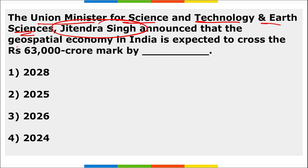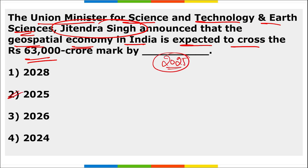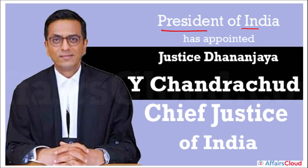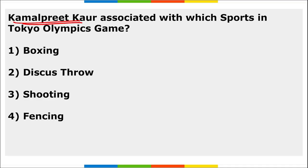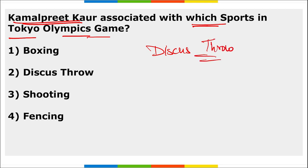Union Minister Jitendra Singh announced that India's geospatial economy is expected to cross ₹63,000 crore by 2025. President of India appointed Justice Dhananjay Y. Chandrachud as the 50th Chief Justice of India. His father was the longest-serving Chief Justice of India.